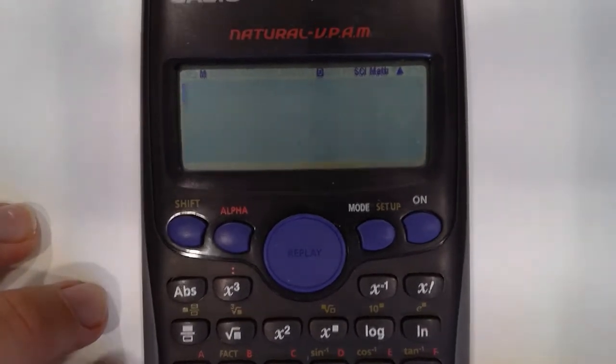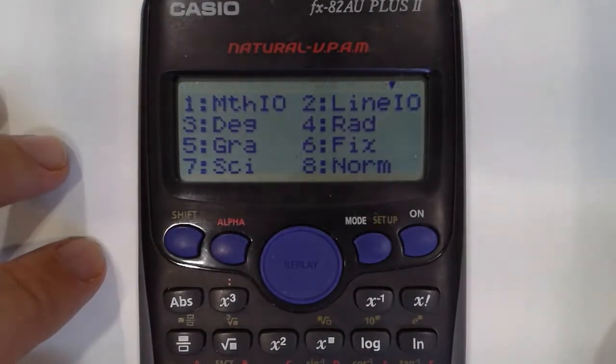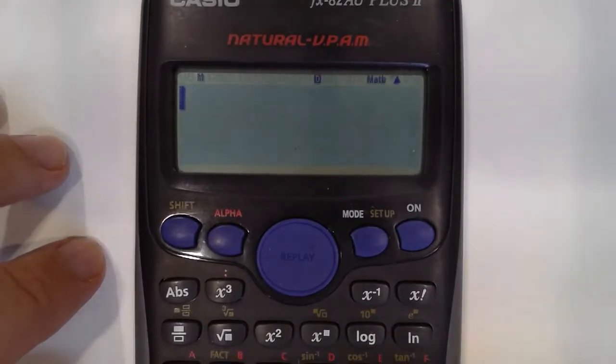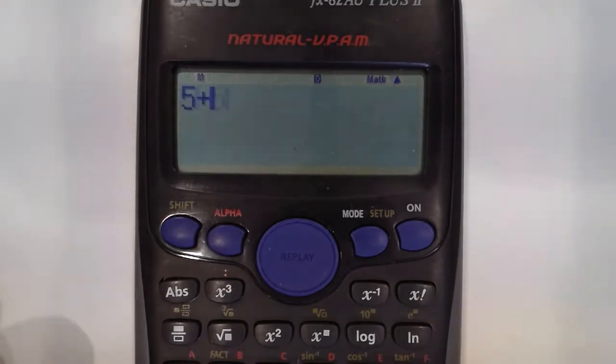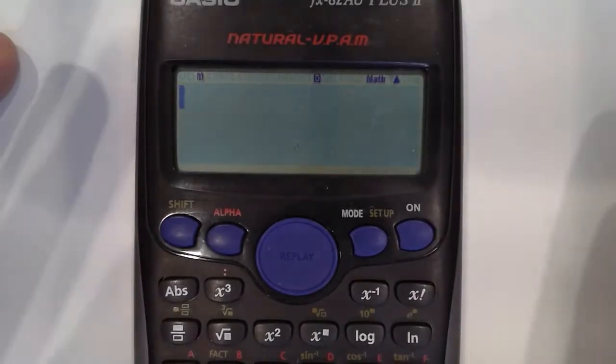So to get it out of that, you go back to shift and set up. You want it into normal, which is number 8. And then if you press 1 afterwards, it now, when I do 5 plus 5, will give me the actual correct answer. So you want to make sure your calculator is in the correct mode first.